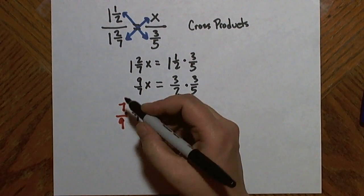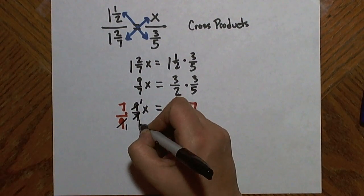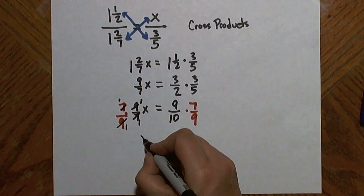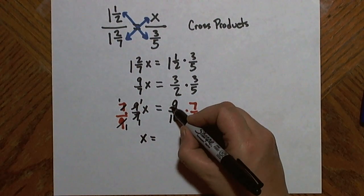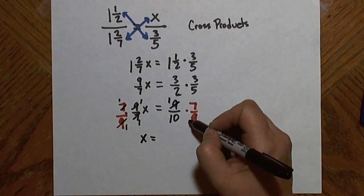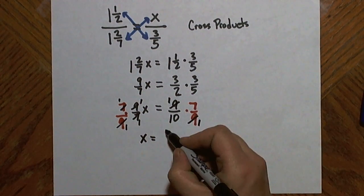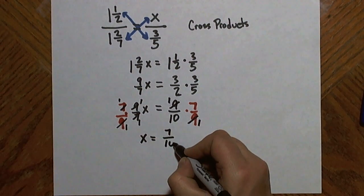When I do that, on this side, the factors in the top and the bottom all cancel out, and I end up with x. On this side, I look and I do see some canceling. I have a common factor of nine in the top and the bottom, and I end up with seven tenths.